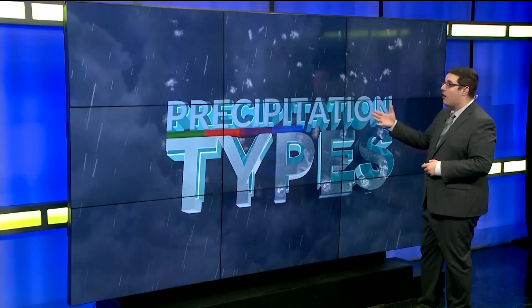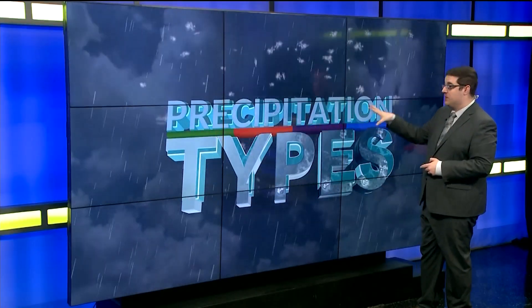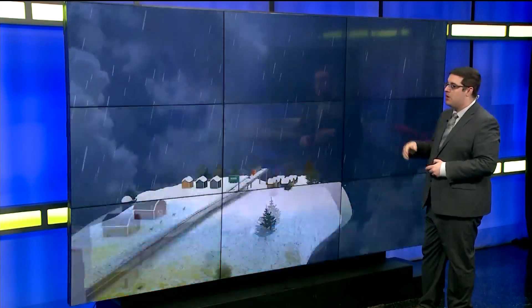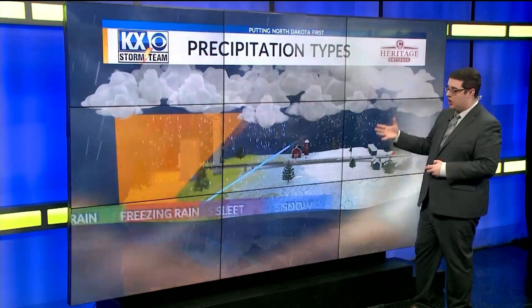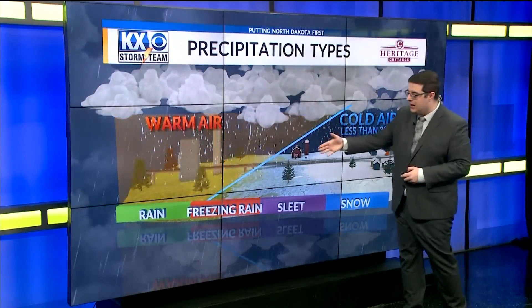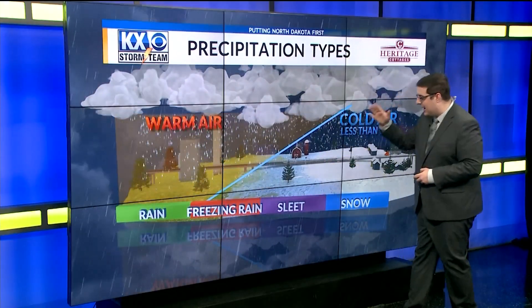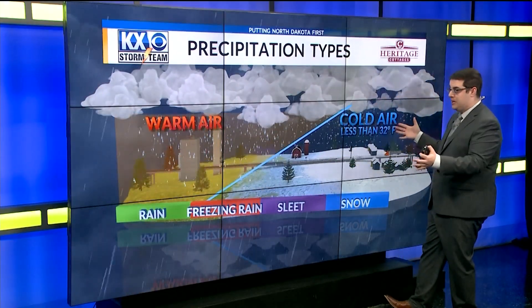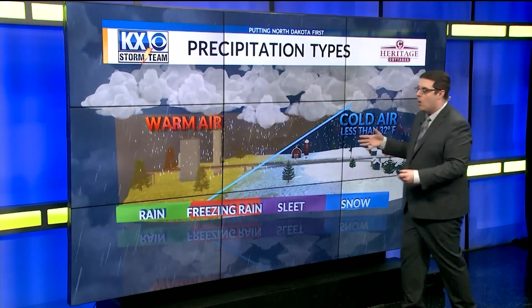To start off, we talk about our four main precipitation types: rain, freezing rain, sleet, and snow. How do those types of precipitation form?